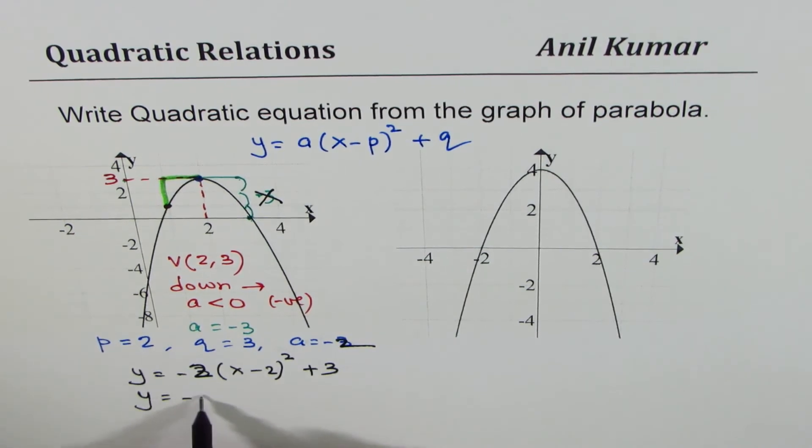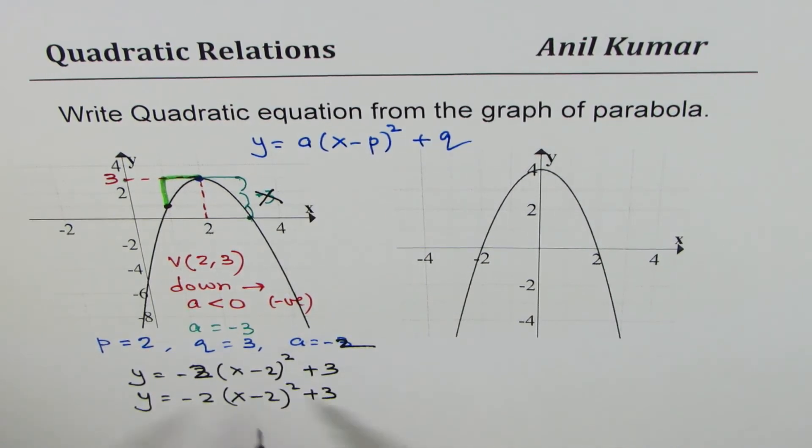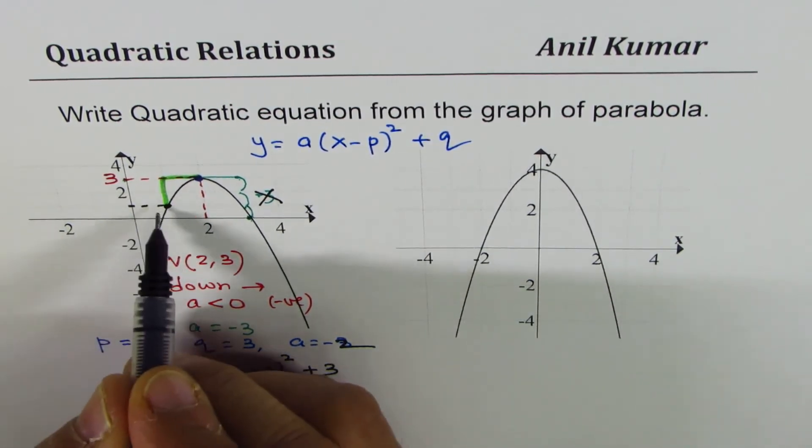So final equation is minus 2 x minus 2 whole square plus 3. Okay, so that was a reading error.